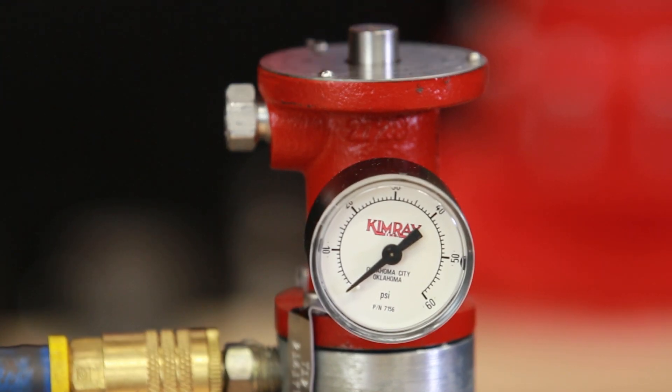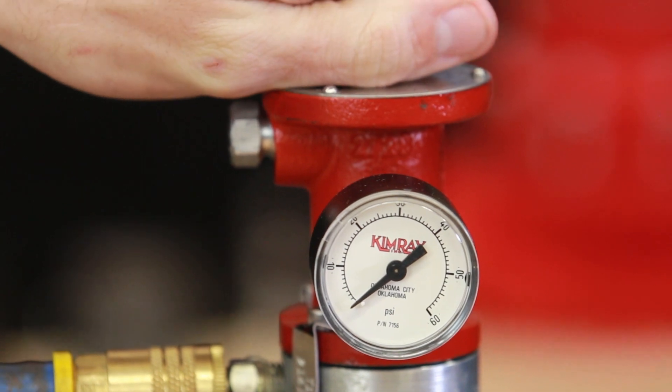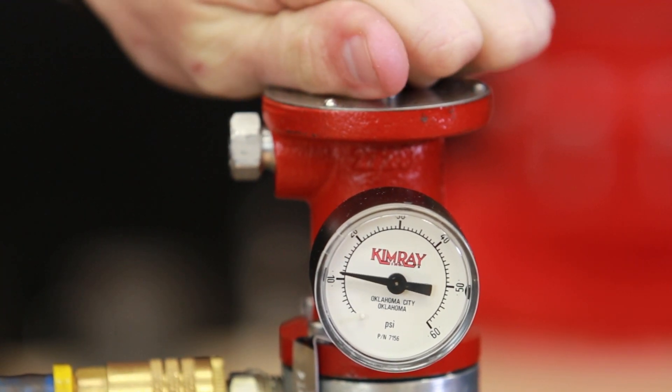Now with no pressure on the gauge, slowly turn the seat clockwise until the gauge reads 10 to 15 psi.